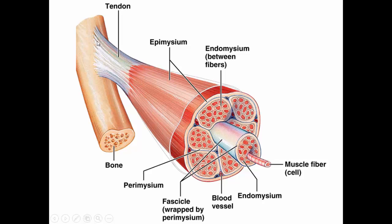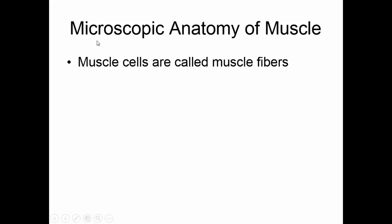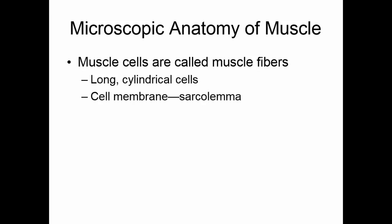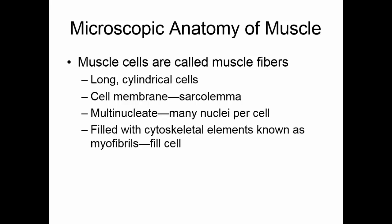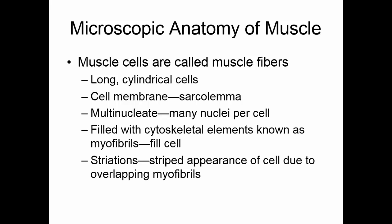The tendon is what attaches the muscle to the bones. Muscle cells are called muscle fibers — they're long, cylindrical cells that extend the entire length of the muscle. The cell membrane gets a new name: it's called a sarcolemma. Skeletal muscle cells are one of the few cells in the body that has more than one nucleus — we say they are multinucleate. They're filled with cytoskeletal elements known as myofibrils, and skeletal muscle has a striped appearance, so we say that it has striations.